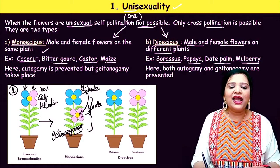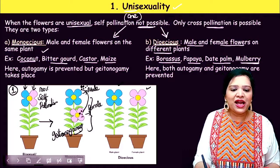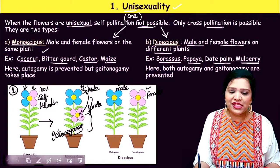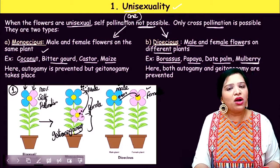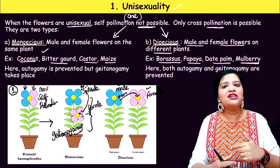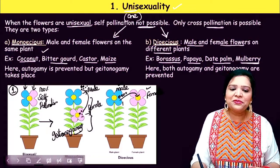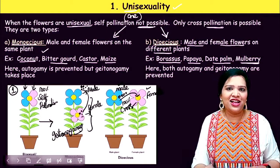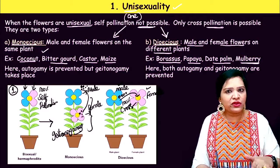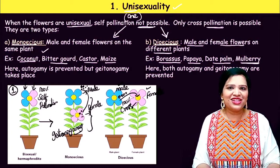In a dioecious plant, one plant has only male flowers and another plant has only female flowers. The male flower produces pollen grains which are transferred via wind, insects, or birds to the stigma of the female flower on another plant of the same species. Here, 100% cross-pollination occurs. In dioecious plants, both autogamy and geitonogamy are prevented.